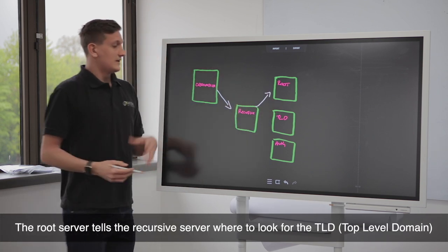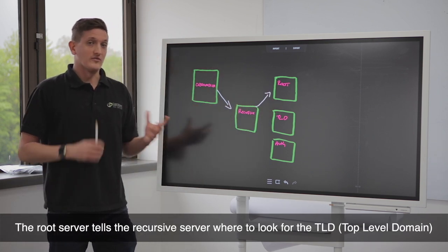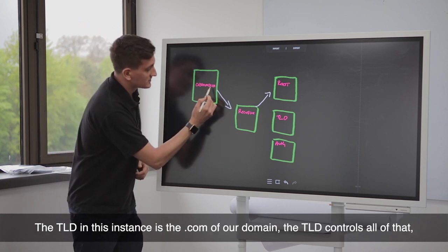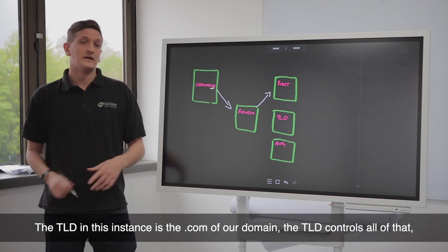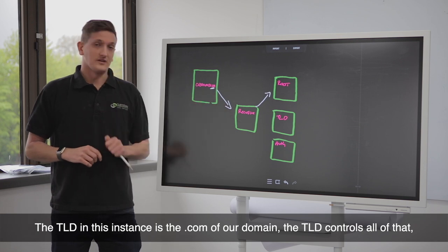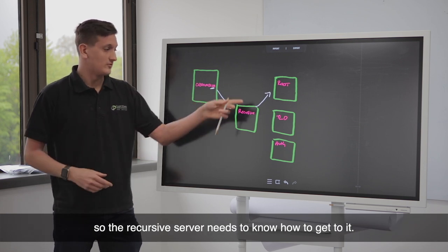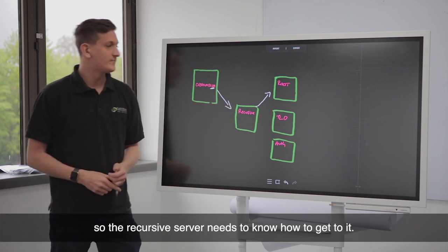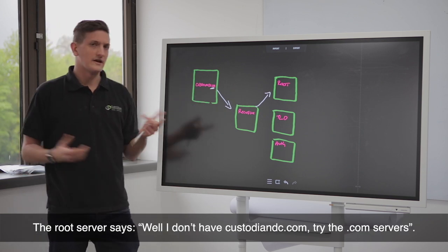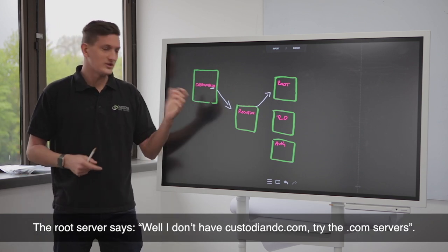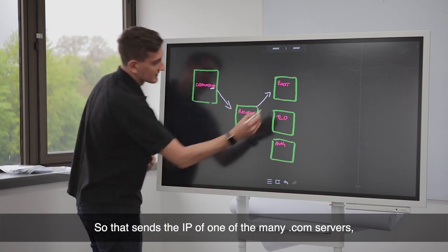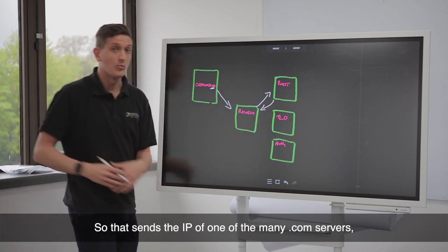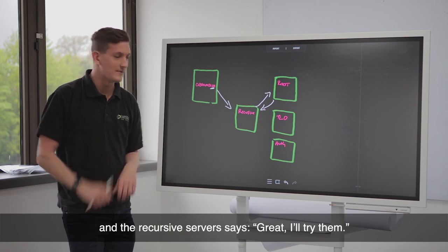The root server gives the recursive server where to look for the TLD. The TLD in this instance is the .com bit of our domain. The TLD server controls all of that, so the recursive server needs to know how to get to it. The root server says, well, I don't have custodiandc.com. Try the .com servers. So it sends the IP of one of the many .com servers, and the recursive server goes, great, I'll try them.